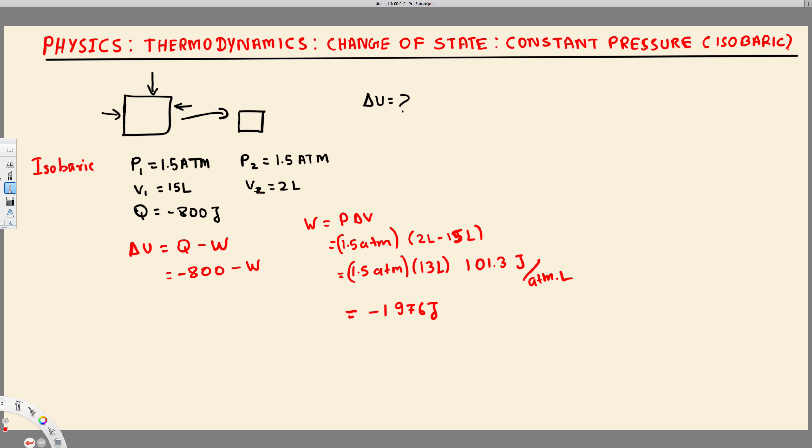And if it's work done by the system, that's positive. So since work done to the system is negative, let's prove that one. This is the right answer. So now we can go ahead and apply this one in this equation and find our delta U.